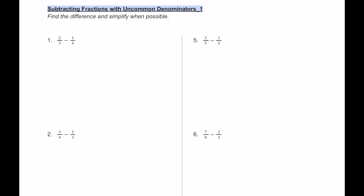For number one, notice how we have the fraction two-thirds take away one-fourth and they don't have common denominators, so we can't subtract them right now because they have different sized pieces. We can use a strategy called the ladder method or the cake method to find their LCM.